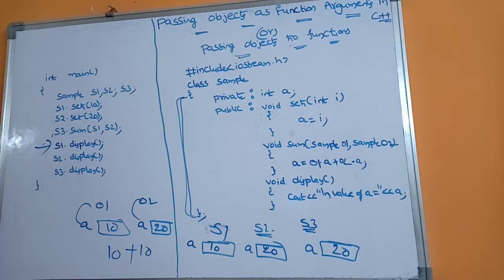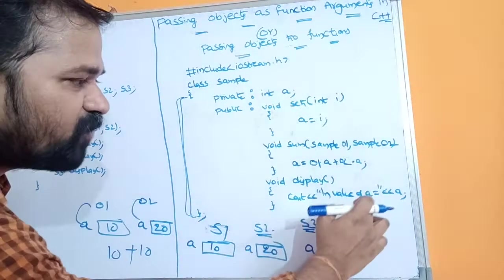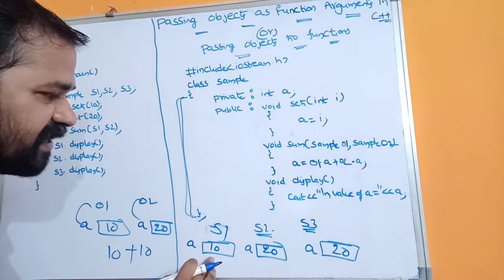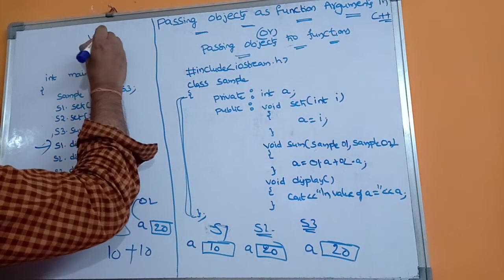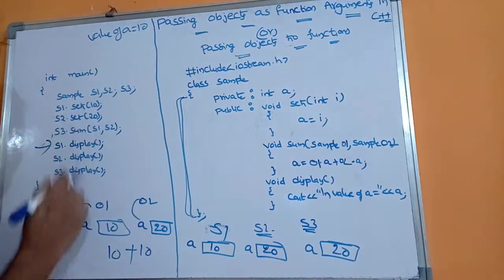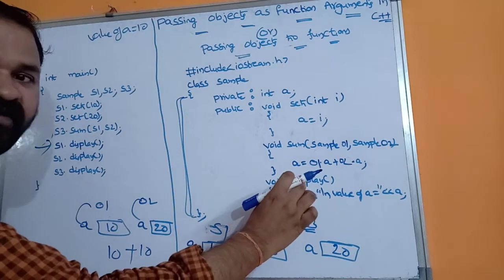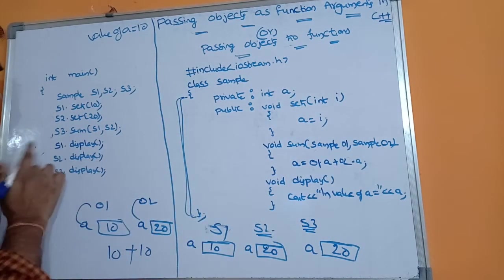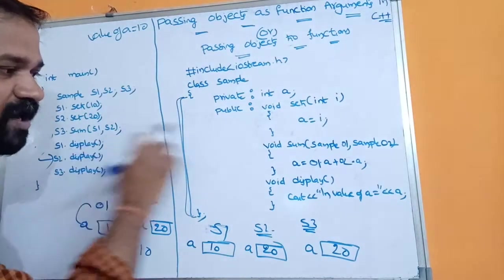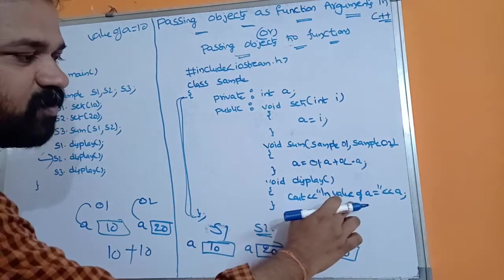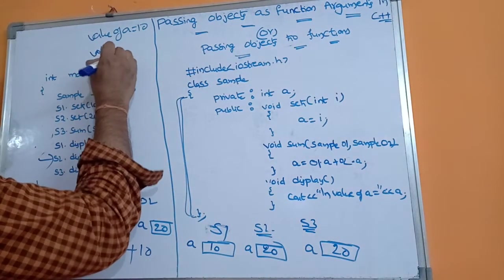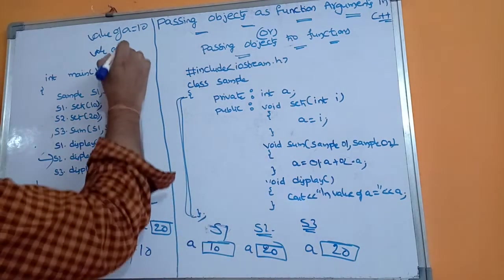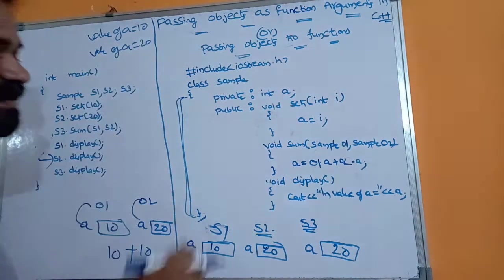Next, s1.display() is called — control goes to the display function. In s1, the value of a is 10, so "Value of a = 10" is printed. Then s2.display() is called — in s2 the value of a is 20, so "Value of a = 20" is printed.